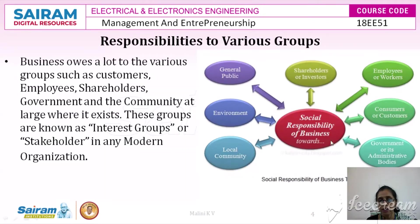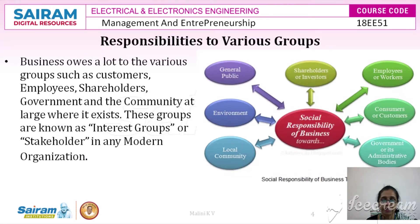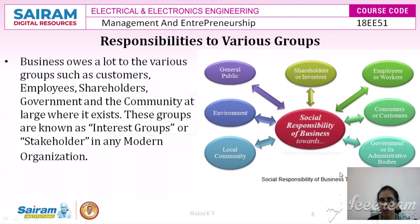Let us understand the responsibilities to various groups. A business owes a lot to groups such as customers, clients, employees, shareholders, government, and the community at large. These groups are known as interest groups or stakeholders. In any modern organization, the social responsibility of the business surrounds shareholders, employees, consumers, government, local community, environment, and general public — all called stakeholders.